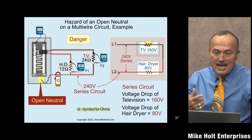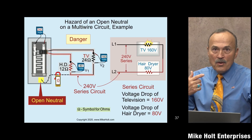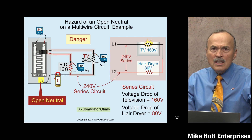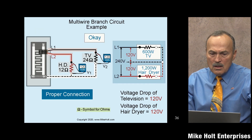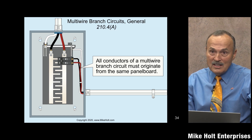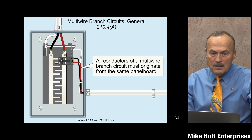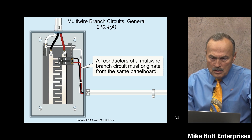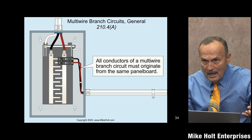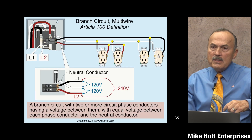Eric points out that this is exactly why you're only allowed to put one neutral under a screw — we'll cover that. Understanding this concept is the foundation for following the code. The multi-wire branch circuit, also known as the Edison circuit, is permitted by code.